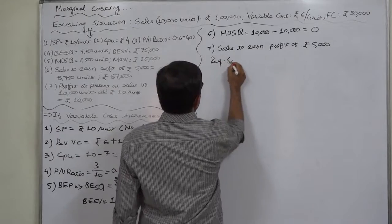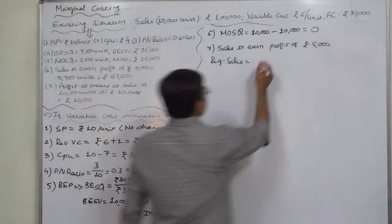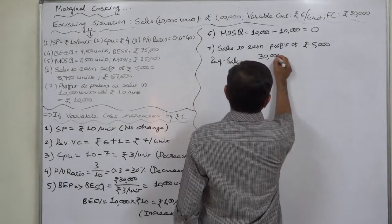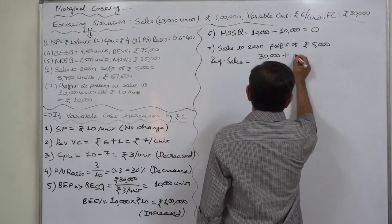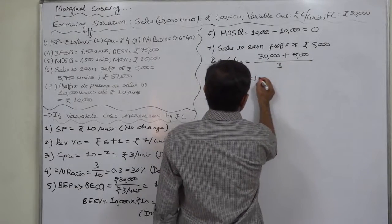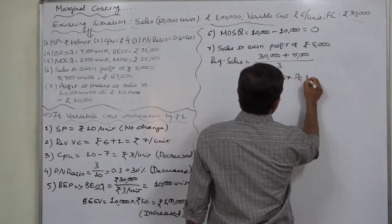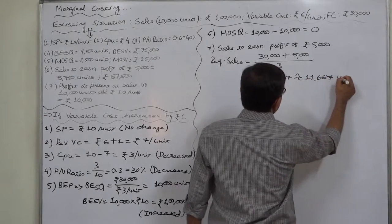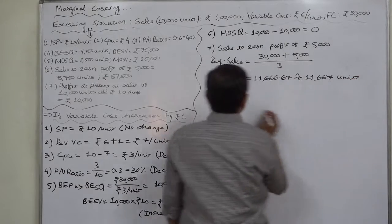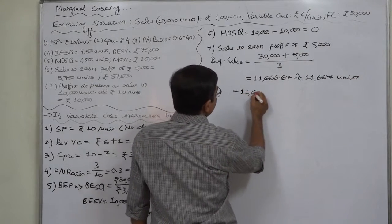Required sales—the formula is fixed cost plus profit upon contribution per unit. Fixed cost is ₹30,000 plus profit ₹5,000 divided by 3, so it comes to 11,666.67 or 11,667 units. If we convert it into value,